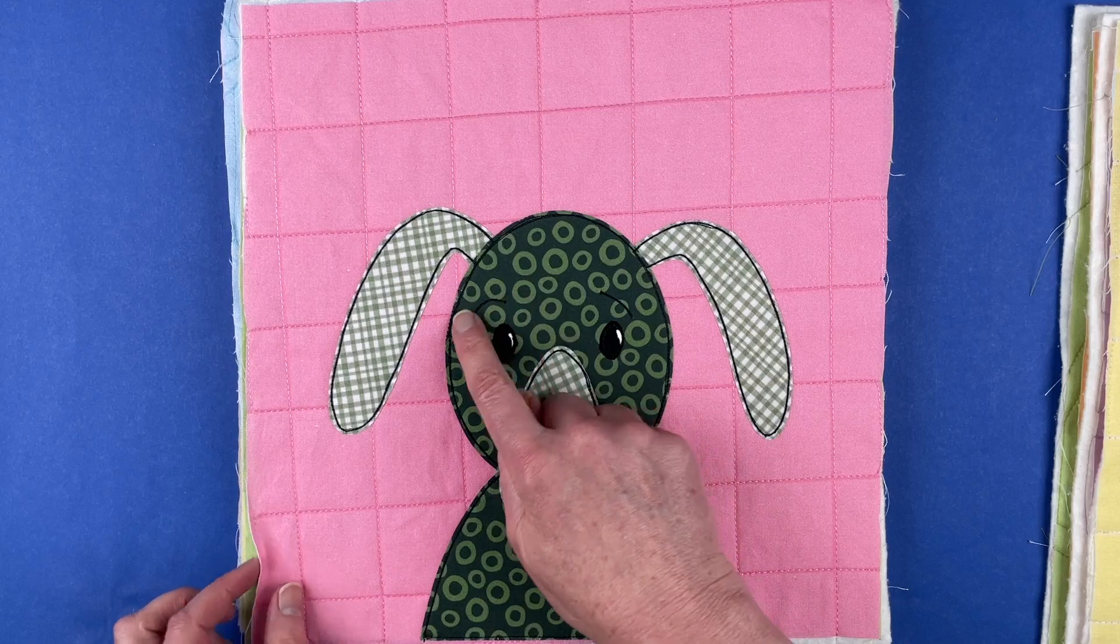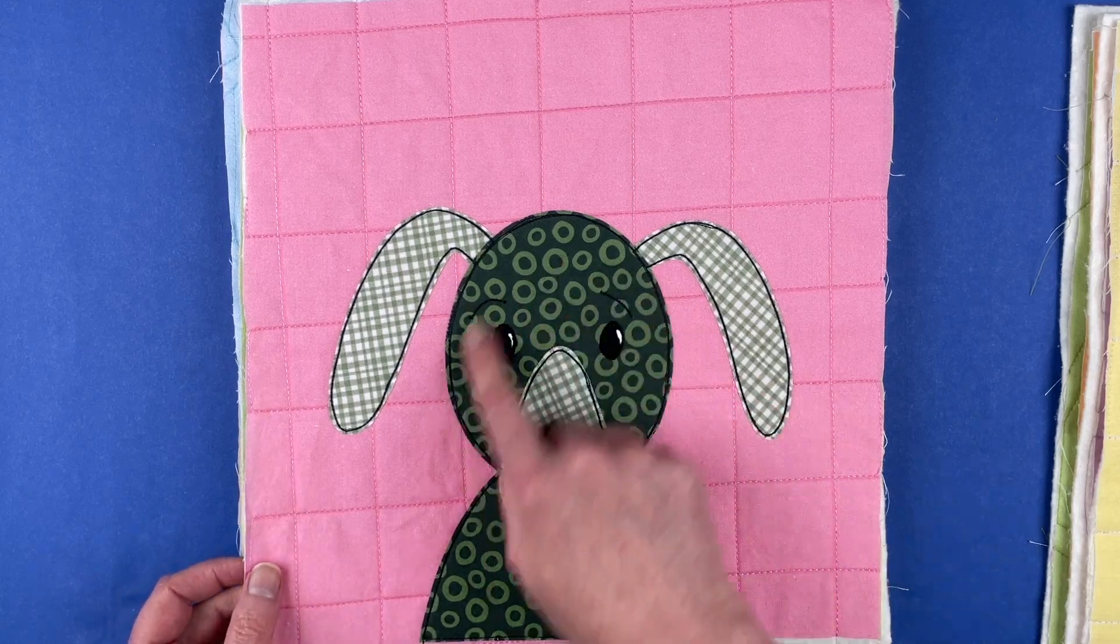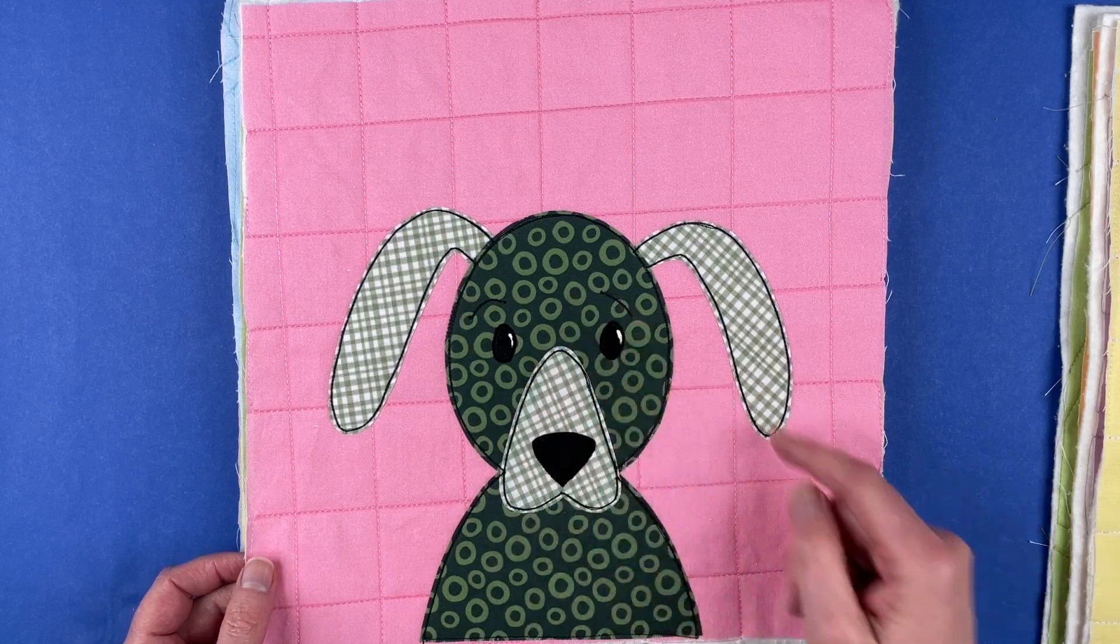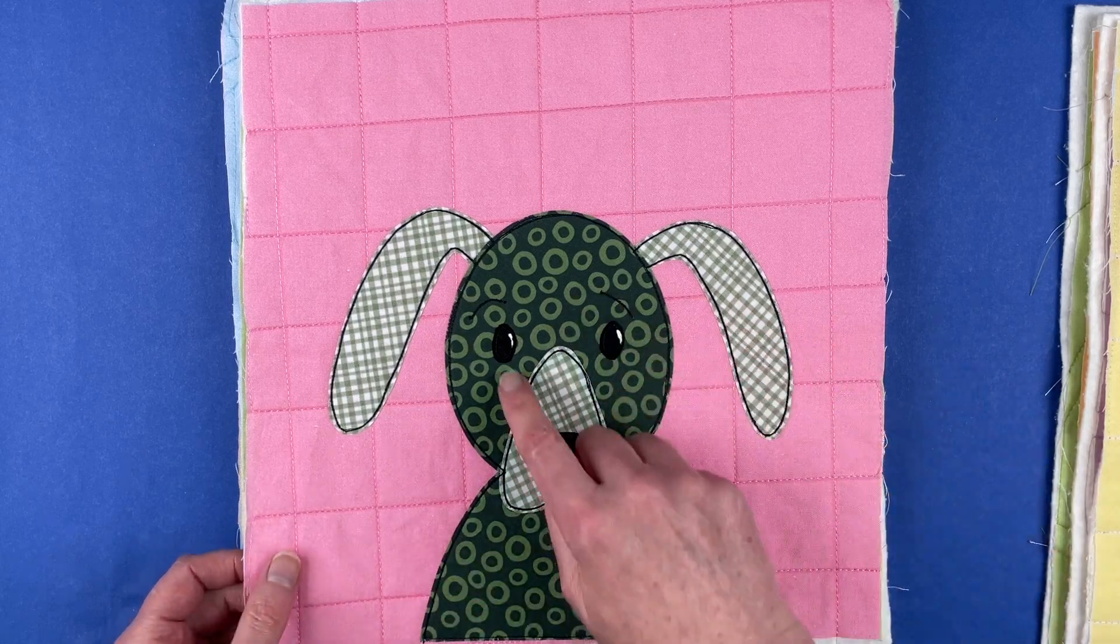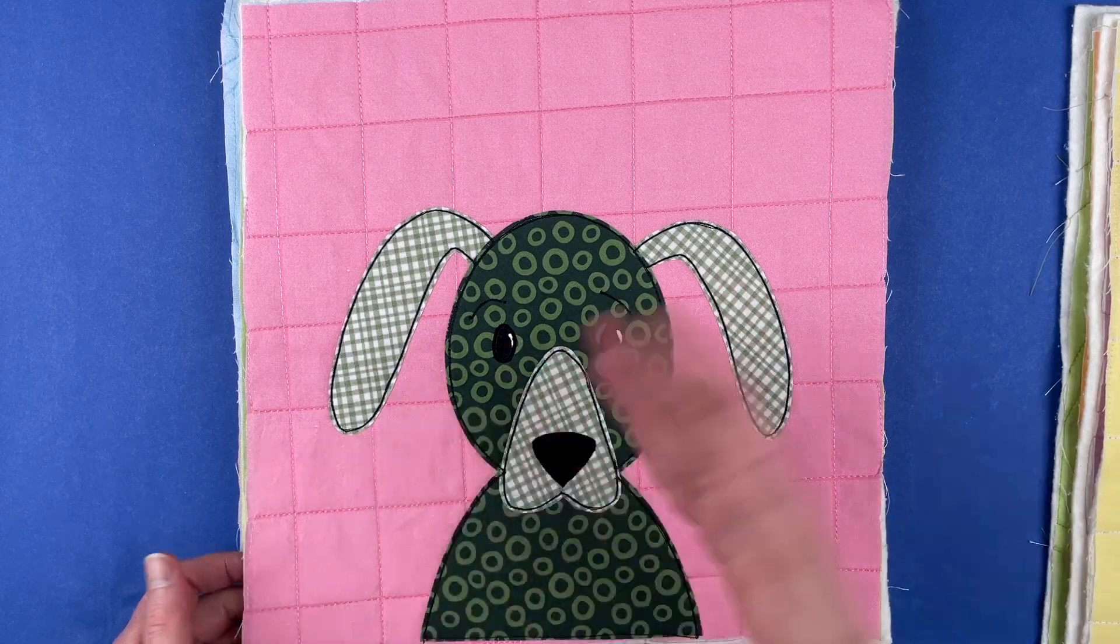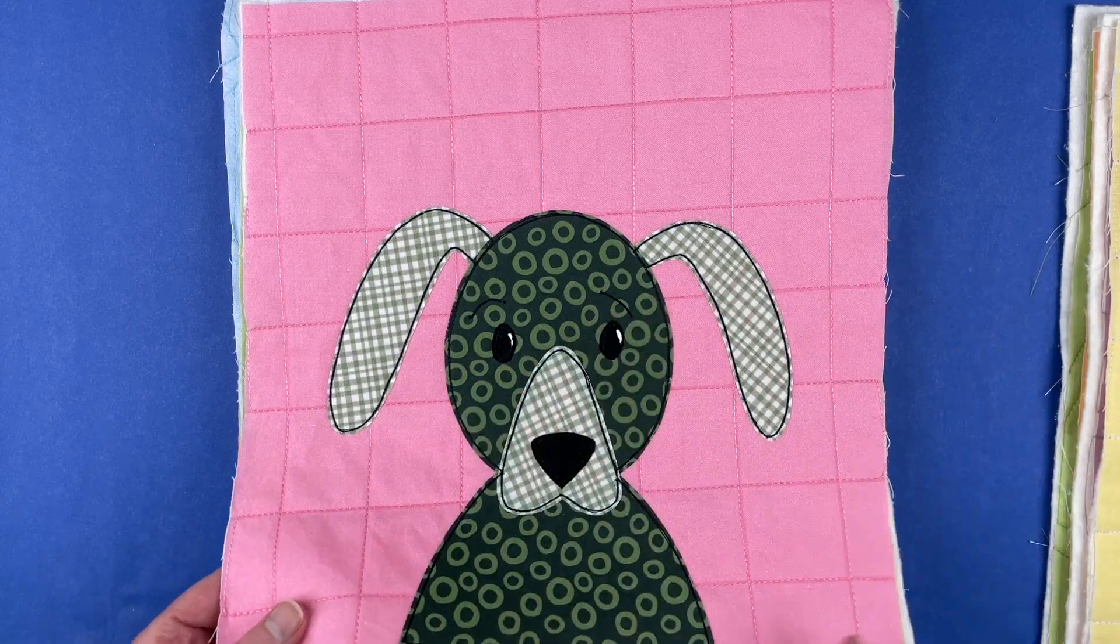This is the only one that I added eyebrows to, and I kind of wish now that I had used a lighter fabric for his face so that those eyebrows would show up more. But that does show you that if you don't like just stitching over the lines like that for definition, you could easily just leave the eyebrows off if you wanted to.